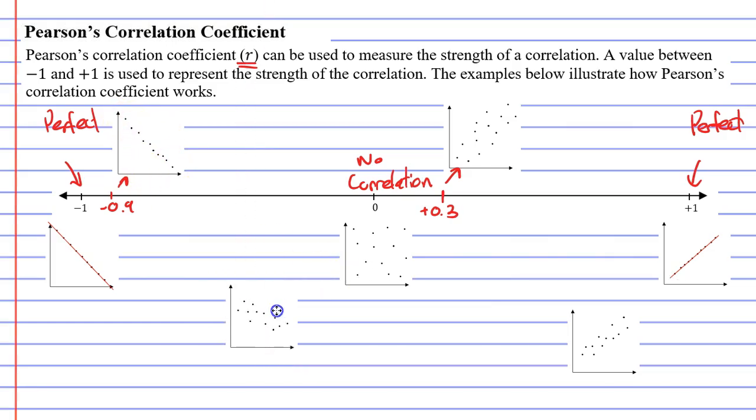When we look at this scatter plot, we can see that it's negative and that it's not strong and not really weak either. Maybe we could say that this is quite a moderate correlation here. So I'm going to give this a score of negative 0.5, so halfway between no correlation and being perfect.